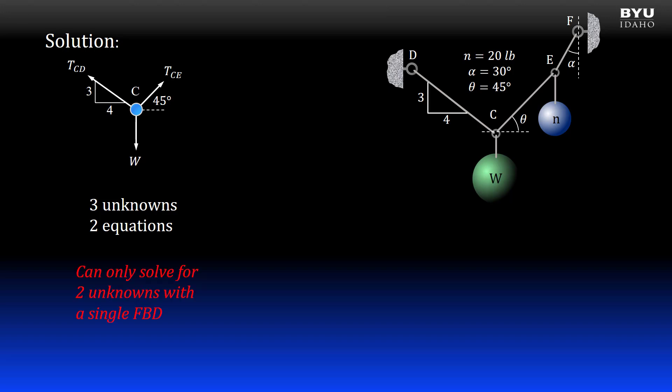We cannot make much progress if we start with point C. So let's look next at the free body diagram of point E. Point E also has three forces: TCE, TEF, and N. However, we know N is 20 pounds. Thus we have two unknowns and two equilibrium equations.